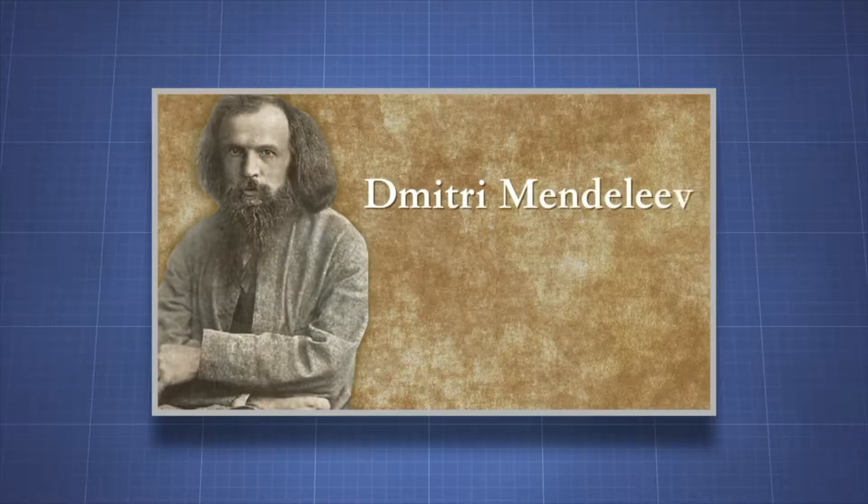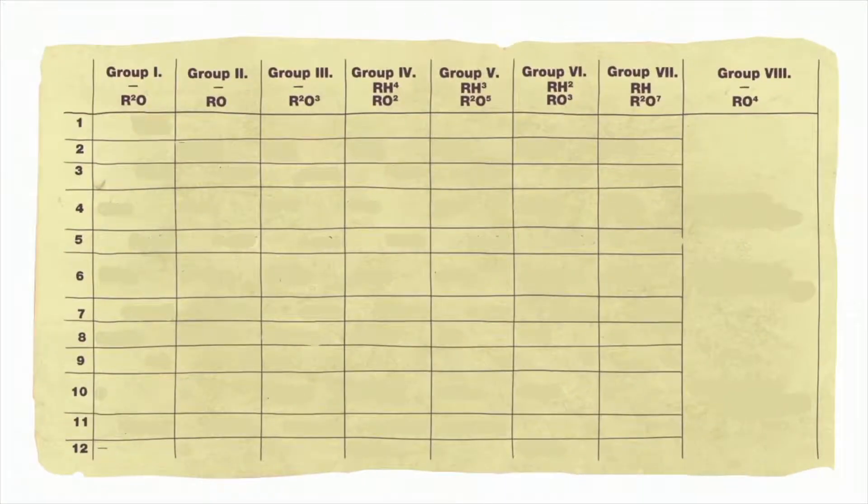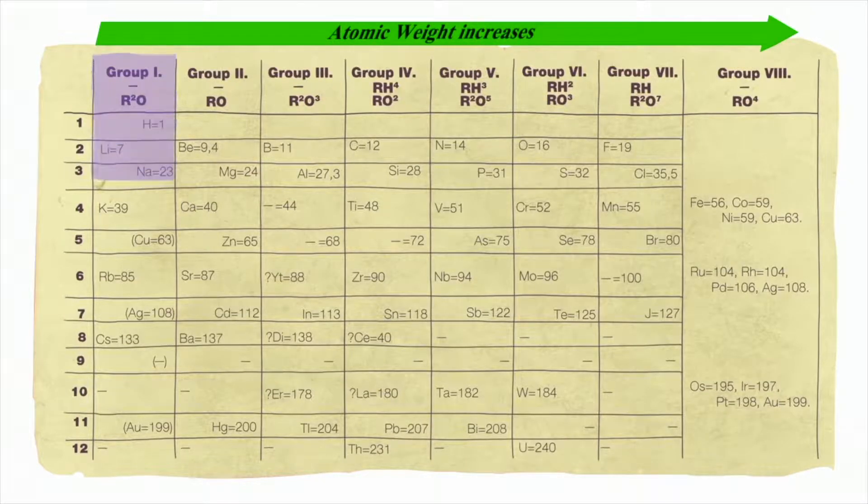In 1869, Dmitry Mendeleev published the precursor to our modern periodic table of elements. In Mendeleev's table, the elements are arranged by increasing atomic weights and grouped according to similar properties.